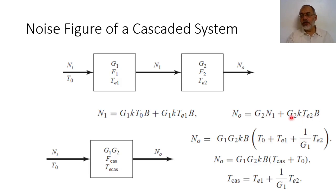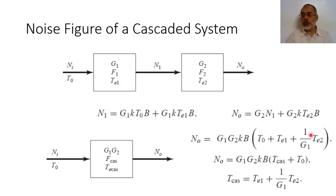This means that the total equivalent noise temperature in this case would be T0 plus the equivalent noise temperature of the first network TE1, plus 1/G1 multiplied by the equivalent noise temperature TE2 of the second network.